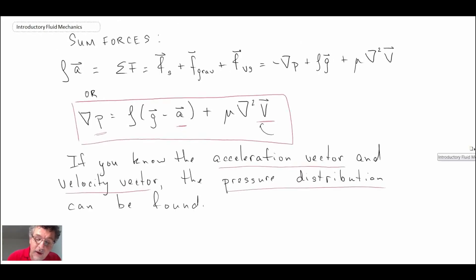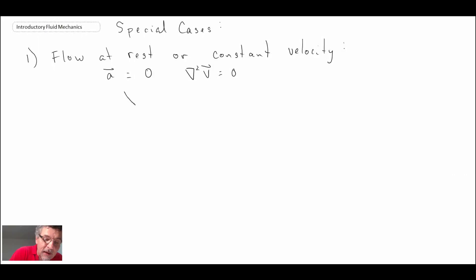So if we look back at our equation, what we end up with is just grad p equals rho times g. And this would be the special case or the hydrostatic condition, which we'll look at more extensively in the next segment.